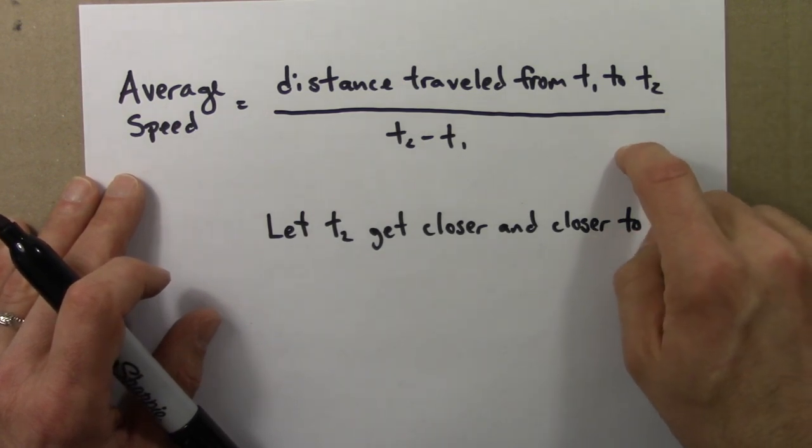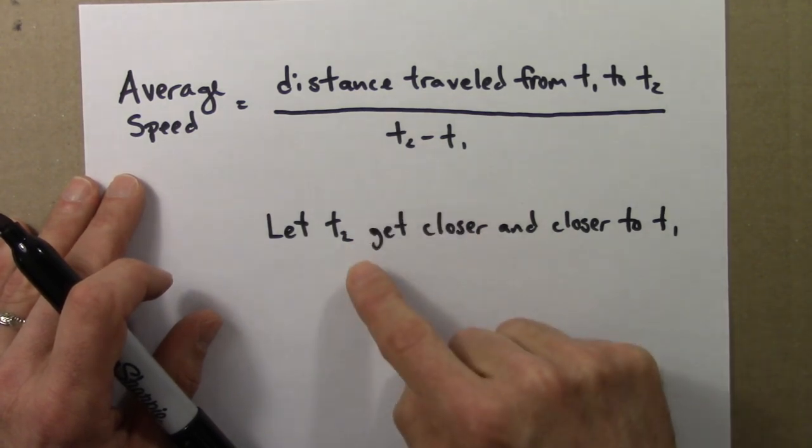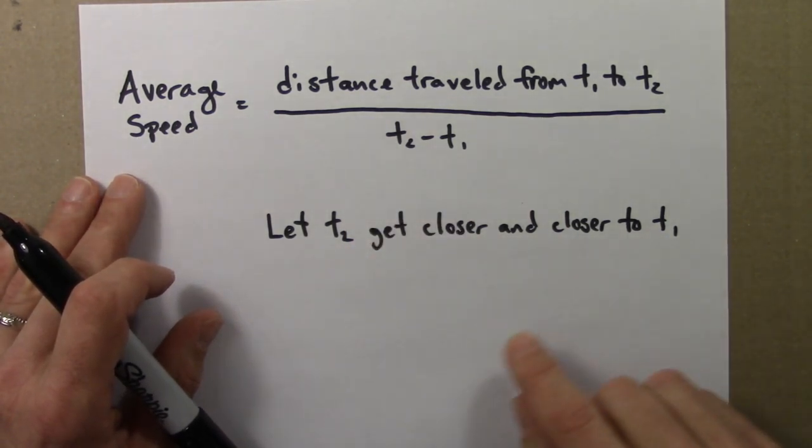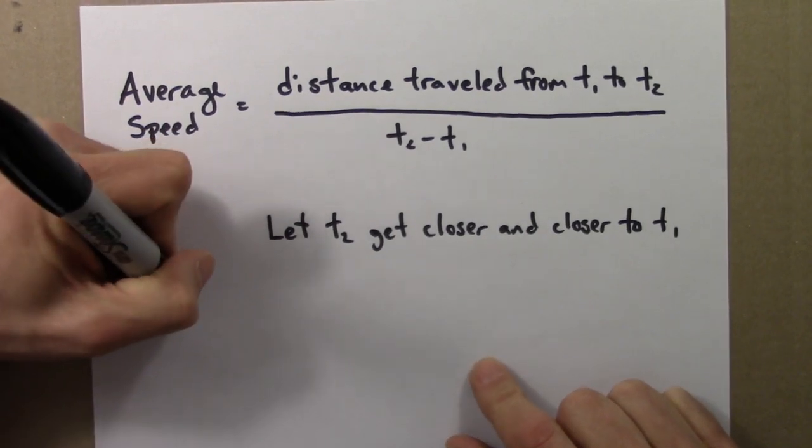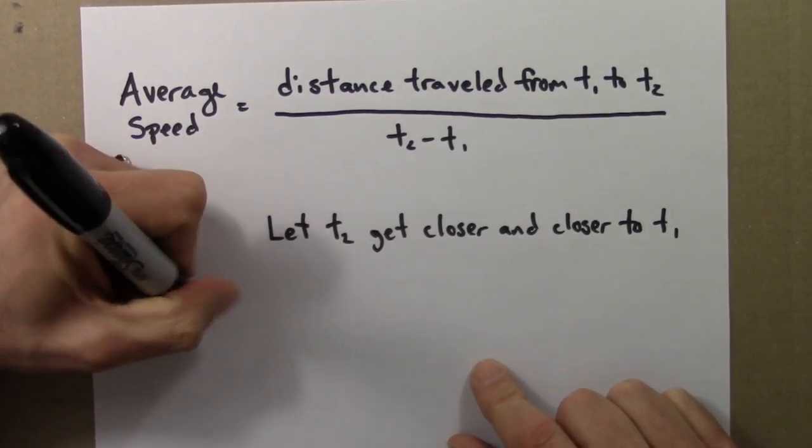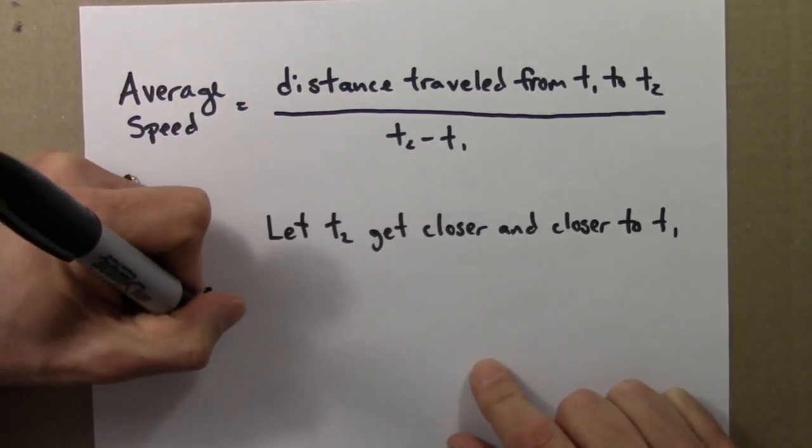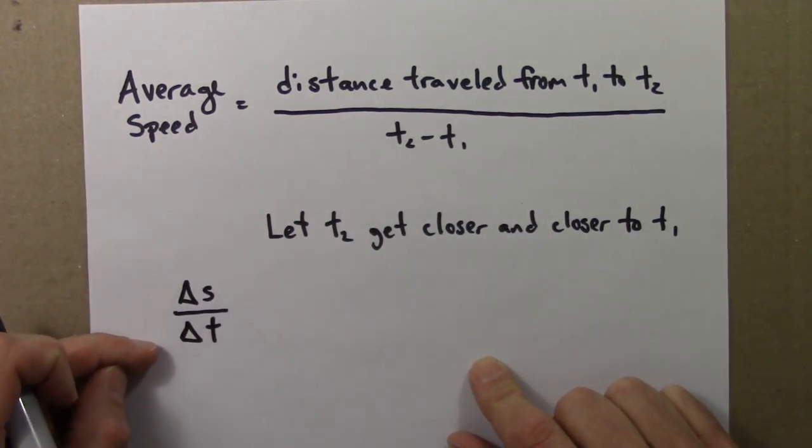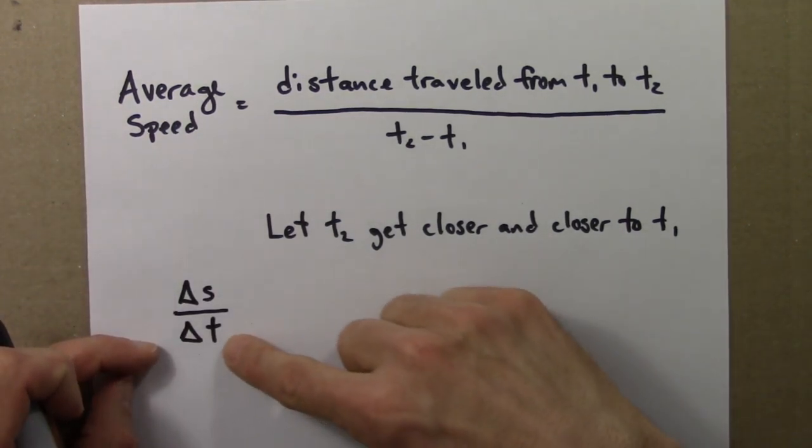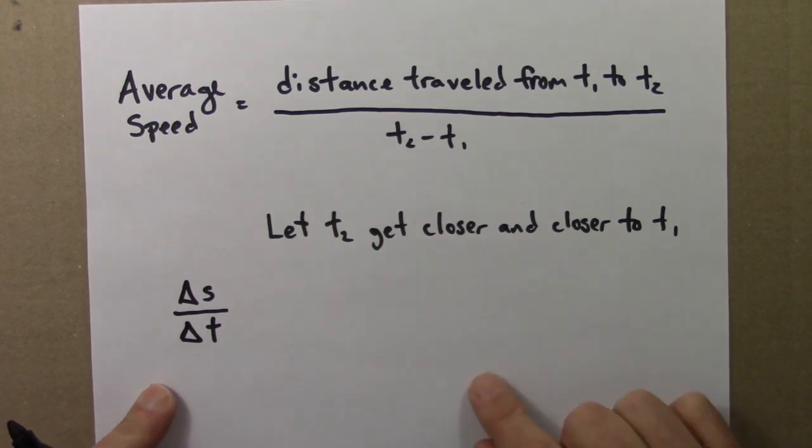And then we can say, well let t2, the second time, get closer and closer to t1. That's equivalent to saying, if I think of that average speed as change in position over a change in time, let this time interval delta t get closer and closer to 0.